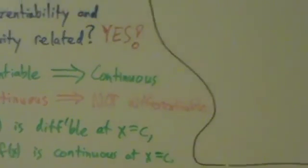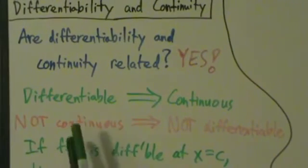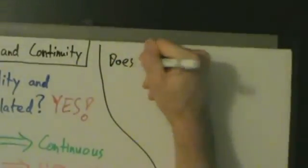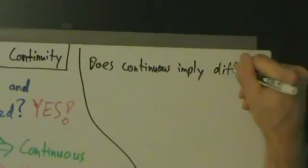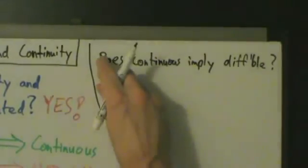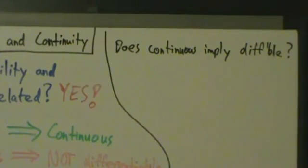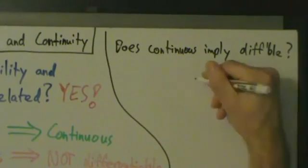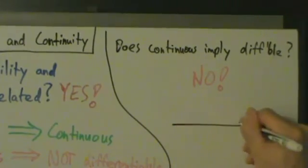So now, does continuous imply differentiable? No, it actually doesn't. When we talked about three ways a derivative doesn't exist, we had absolute value of x, x to the one-third, and x to the two-thirds. Those functions were all continuous, but the derivatives didn't exist at zero. So the answer is no — continuous does not imply differentiable.